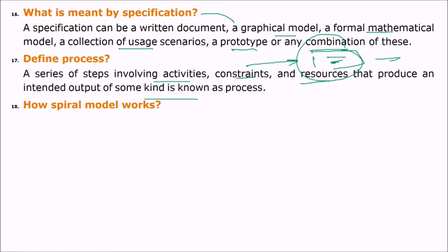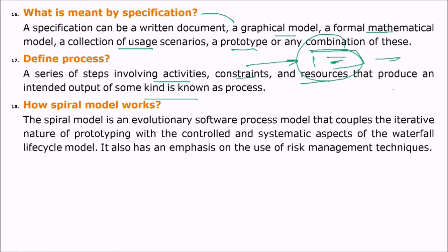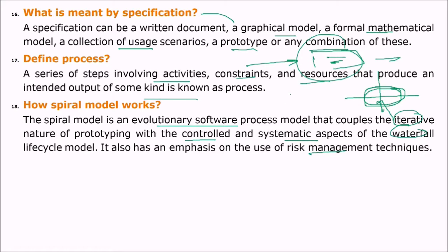How does the spiral model work? The spiral model has four coordinates and deals specifically with risk analysis. It is an evolutionary software process model that couples the iterative nature of prototyping with the controlled and systematic aspects of the waterfall lifecycle model — so iterative plus waterfall gives you the spiral. It also emphasizes the use of risk management techniques.